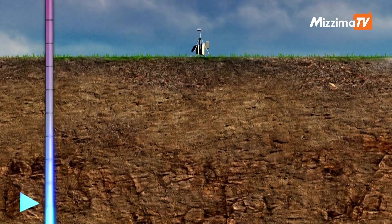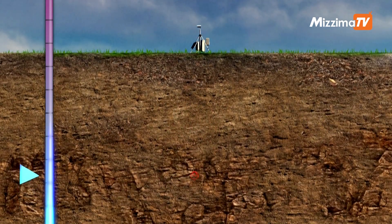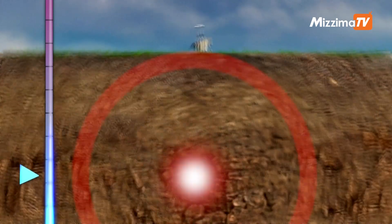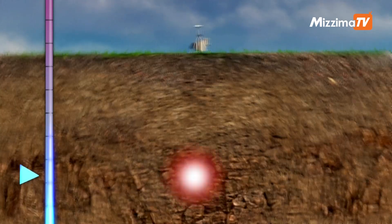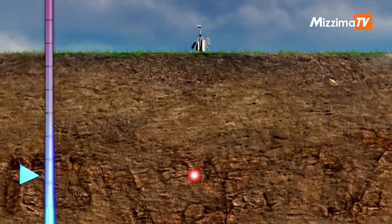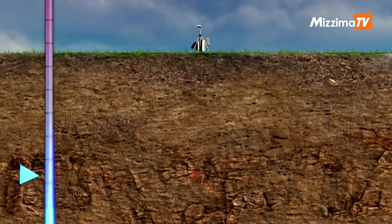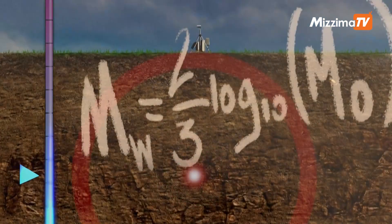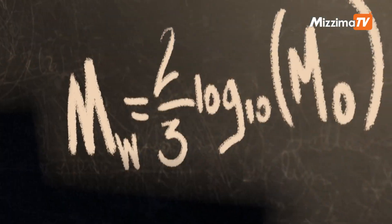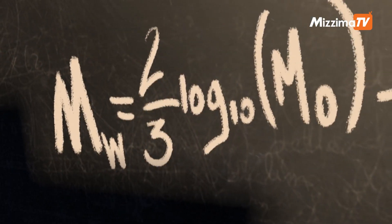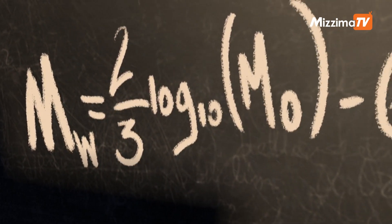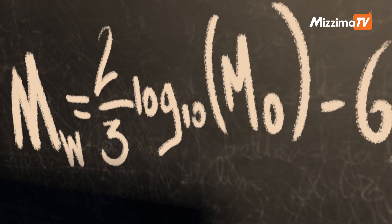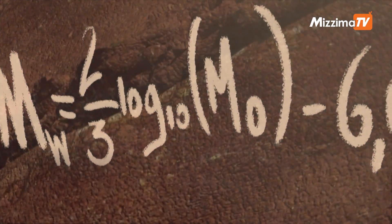Magnitude is a logarithmic quantity. A one degree increase on the magnitude scale corresponds to a release of energy 30 times greater. The Richter scale is one of many units of magnitude, but seismologists prefer to use the moment magnitude scale.